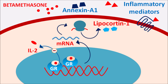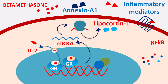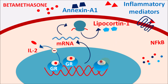Inflammatory mediators act on their corresponding receptors to activate inflammatory pathways. One important pathway is NFκB (nuclear factor kappa B), which interacts with DNA to produce inflammatory gene transcription, releasing various inflammatory mediators. Betamethasone, by occupying glucocorticoid receptors, can inhibit the activity of NFκB, thereby inhibiting the release of inflammatory mediators and reducing inflammatory gene transcription.